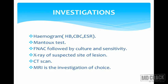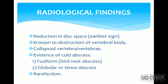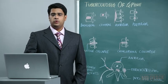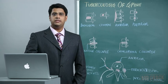Investigations commonly done include hemogram (complete blood count), erythrocyte sedimentation rate, Mantoux test, FNAC (fine needle aspiration cytology), X-ray of the affected part, CT scan, and MRI. MRI is significant especially in tuberculosis spine because it gives a clear picture of soft tissue, bony involvement, nerve affection, and the level of compression. The modality of choice after X-ray is MRI in tuberculosis spine.